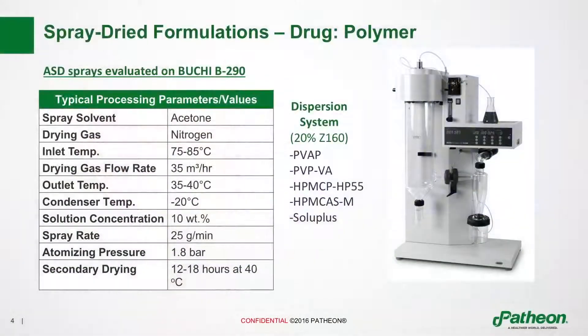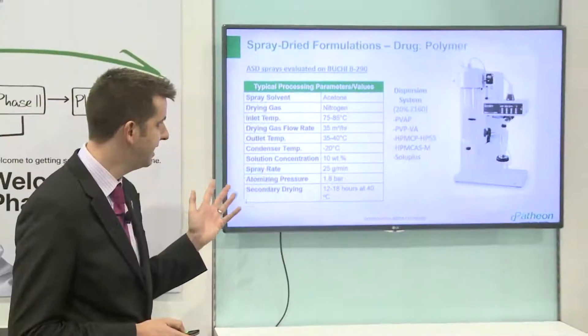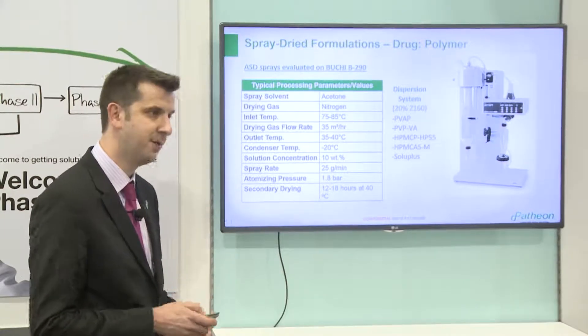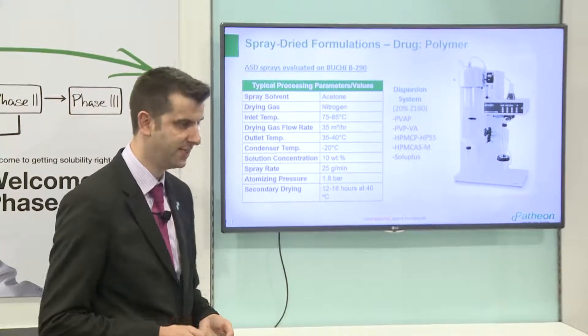The next step is to go into the lab. We can do very small scale trials using an Ibuki B290, which doesn't use too much API. In this case we're looking at a 20% dispersion of our API with the polymers selected through the Quadrant 2 system, both dissolved in acetone, then doing small spray runs to give us samples for characterisation.